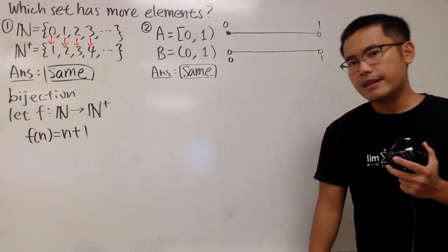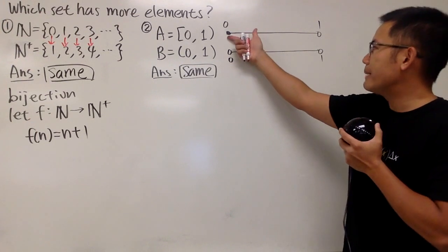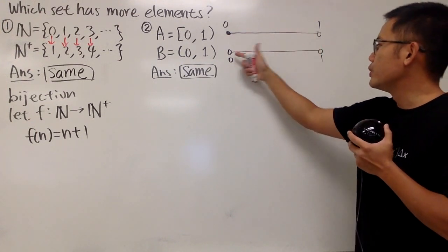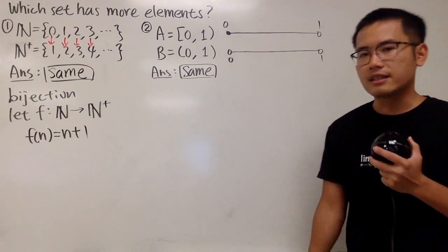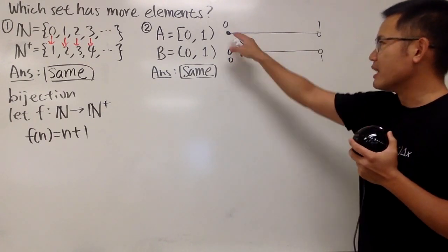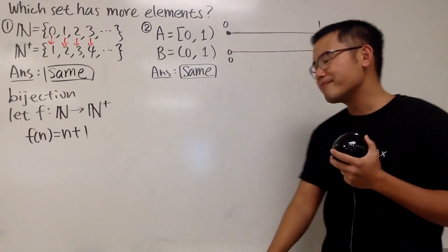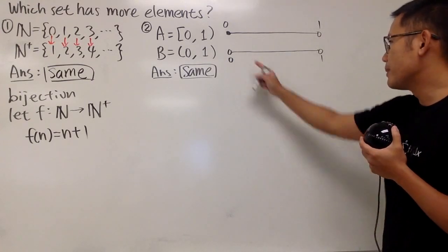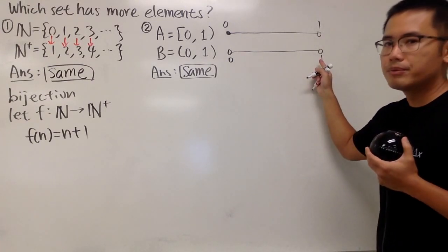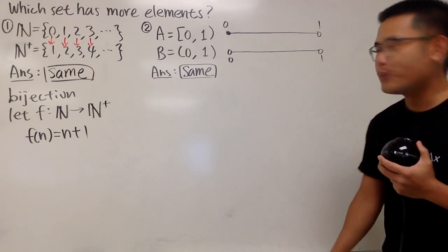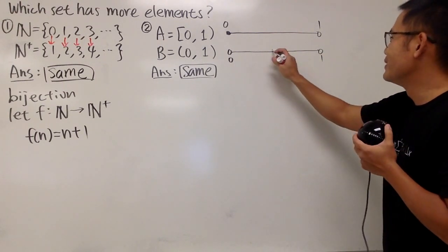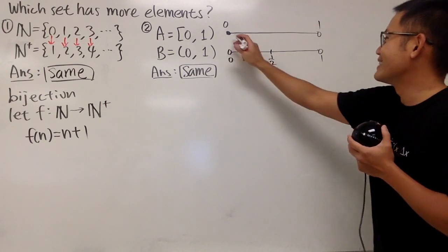Now, we have to think about how we can map all these numbers right here to these numbers here. Perhaps let's focus on the zero first, because it seems like the zero is that extra number. Well, we have to think about a number right here so that zero can be mapped to. From zero to one, what's in the middle? Of course, one-half. Let's just map this into one-half. How's that? Why not? Good.